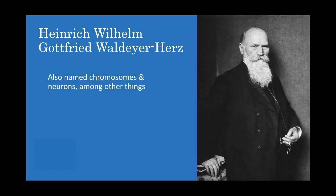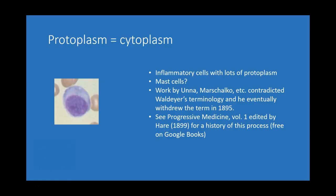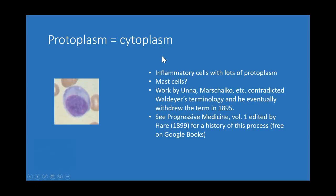He was the first to publish the term 'plasma cell' in the medical literature. The reason he called them plasma cells was actually because of the extreme amount of protoplasm in the cells. You can see an example of a plasma cell here — it does have a lot of what we would now call cytoplasm. The reason for that is that plasma cells are making immunoglobulins at up to thousands per second, so they get really big. They have a lot of endoplasmic reticulum, Golgi bodies, and all the things needed to synthesize large quantities of proteins — so they're very large cells with lots of cytoplasm.